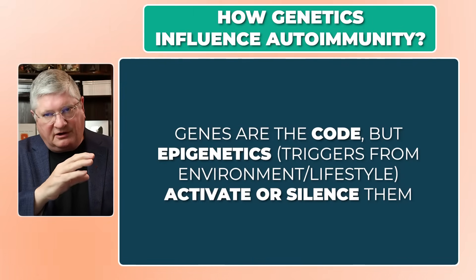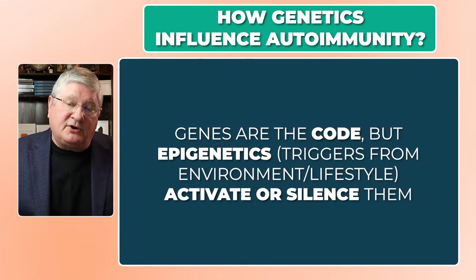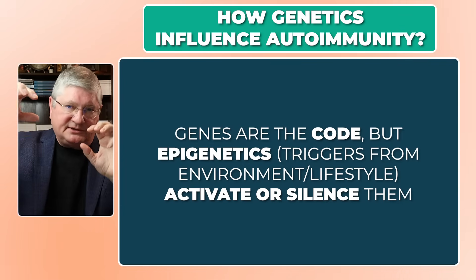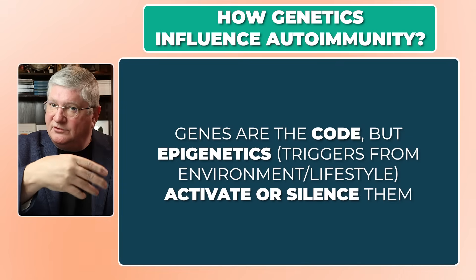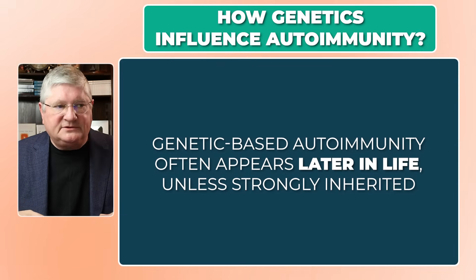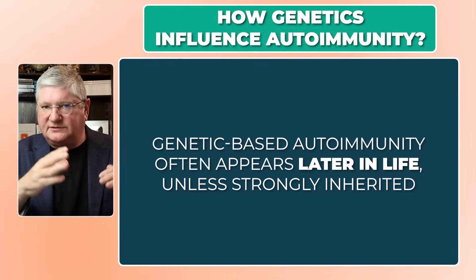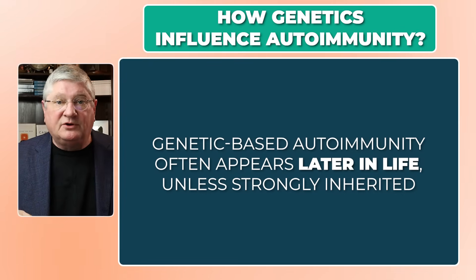Are genetics the primary driver? Yes and no. Genetics largely don't do anything on their own because they are the roadmap or the code. It's the epigenetic signaling that turns on or turns off your genetics that can lead to dysfunction. This is why genetically triggered things in autoimmunity may not present until you're 20, 30, 40, or even older.